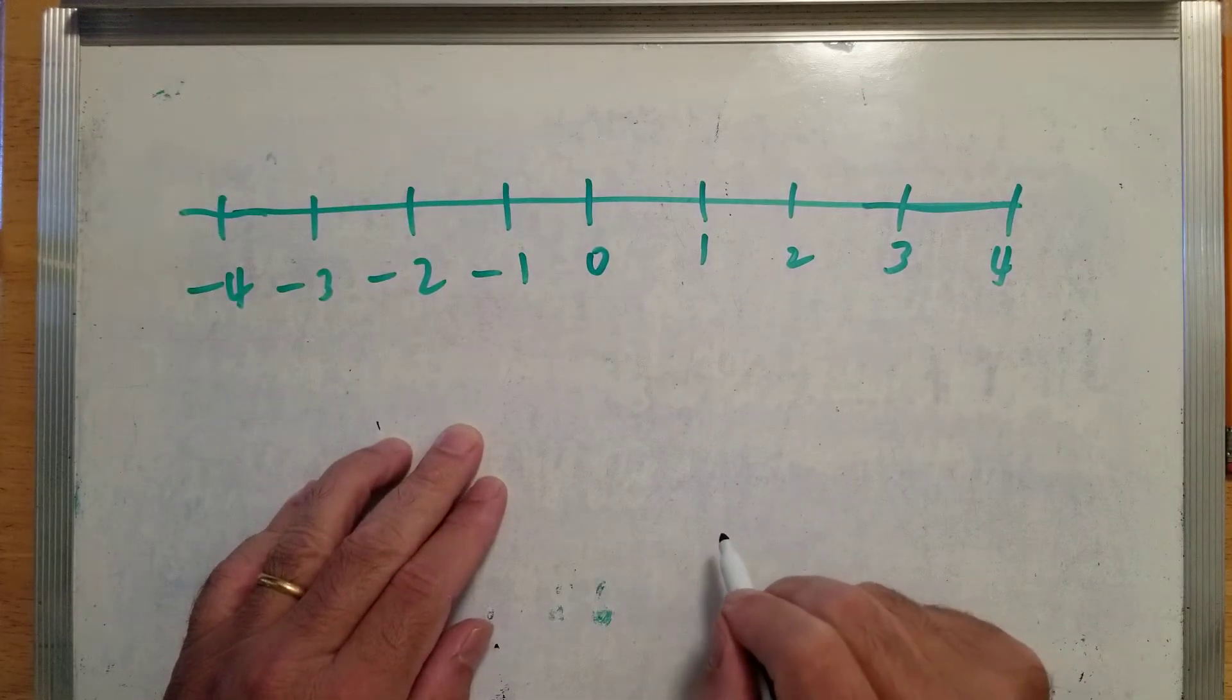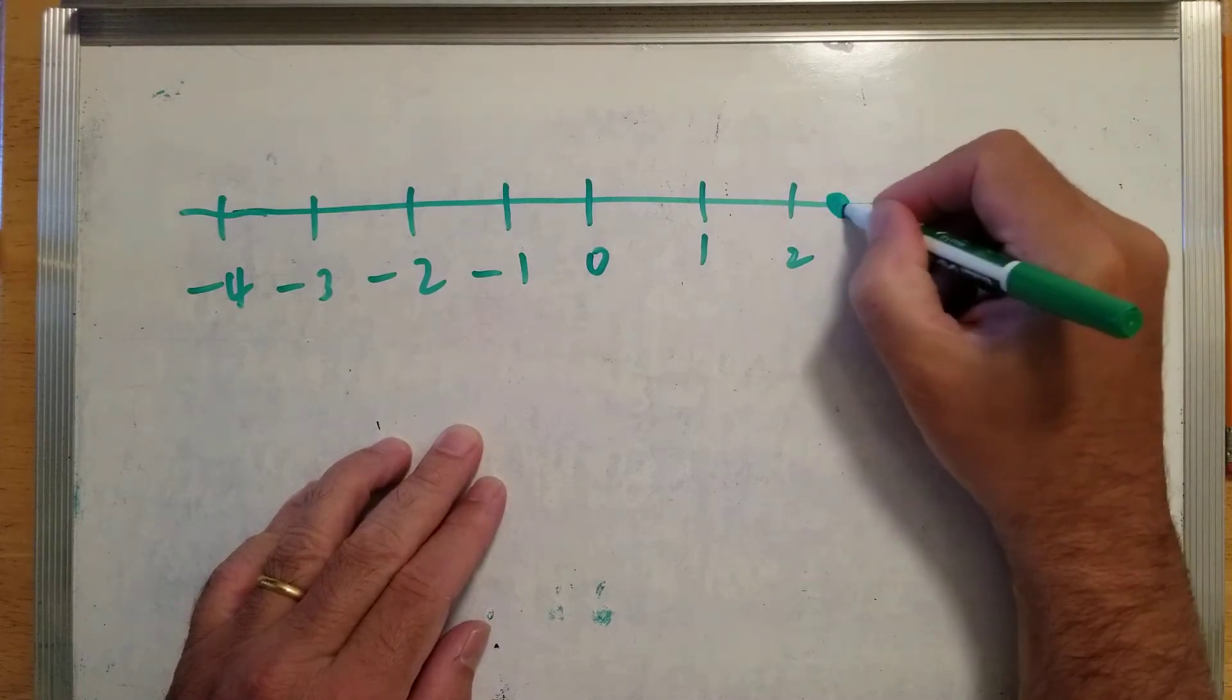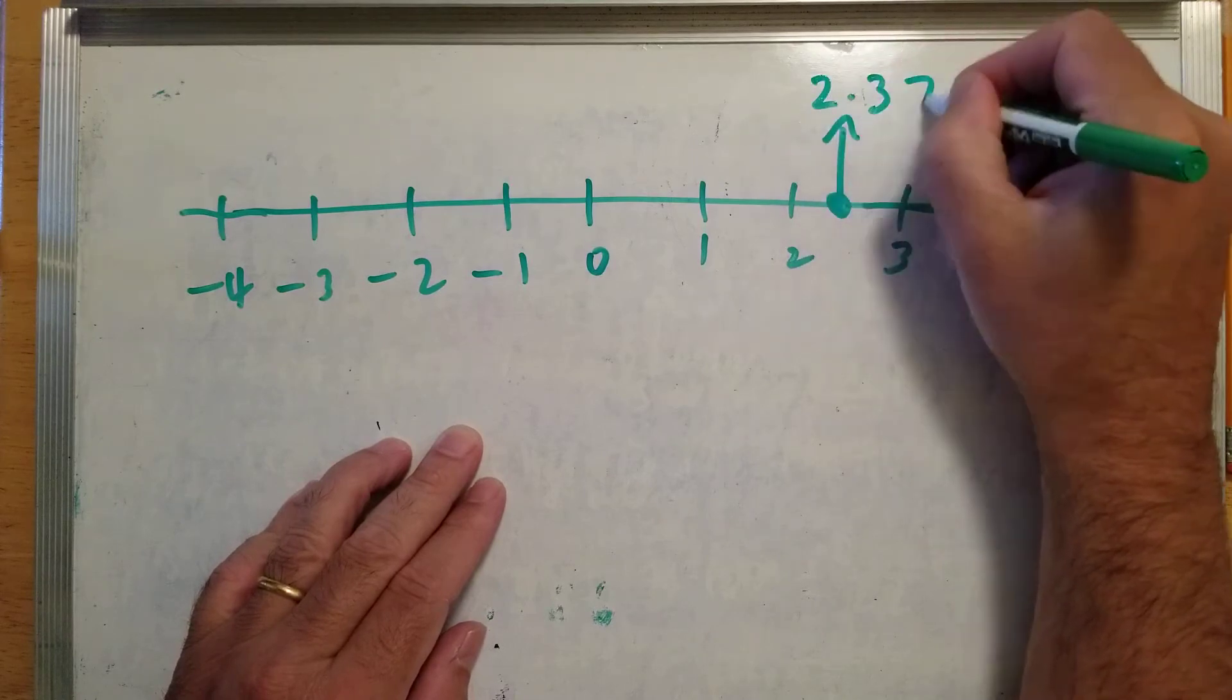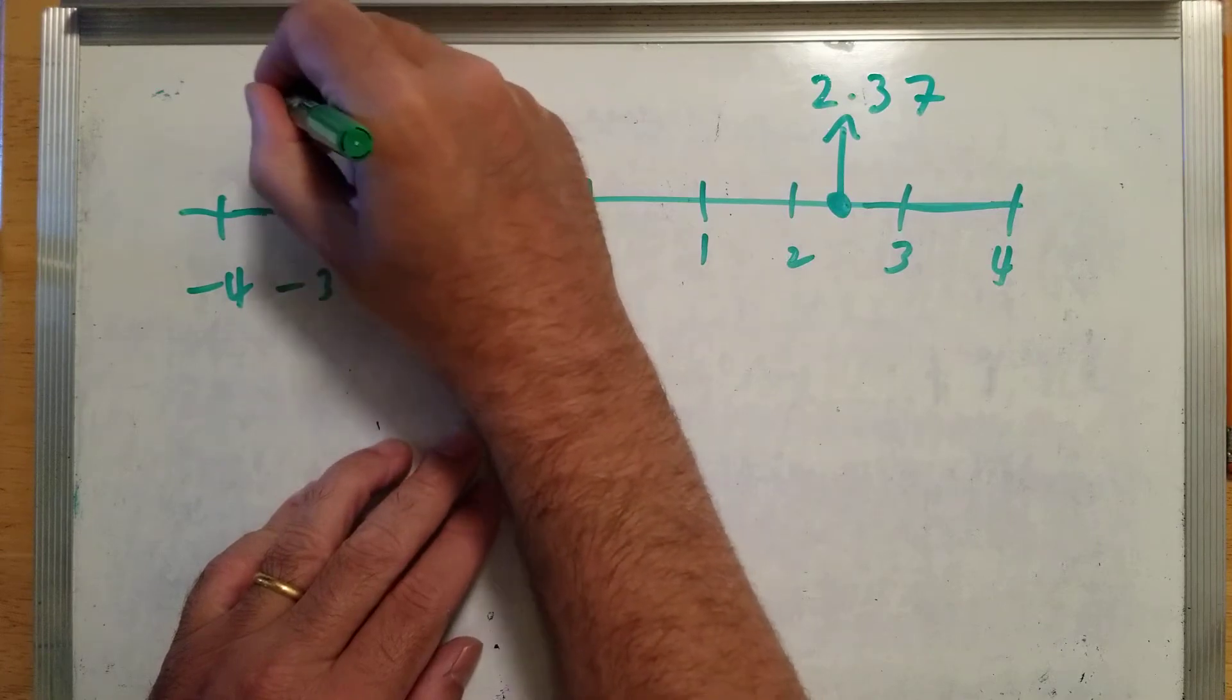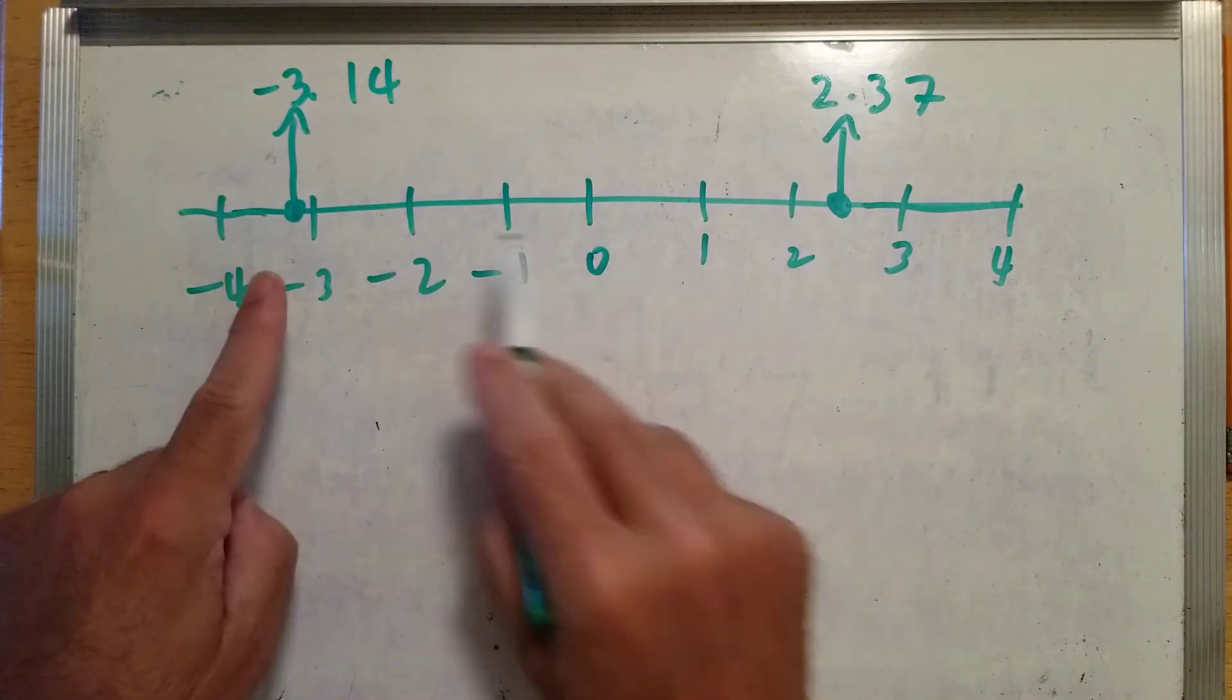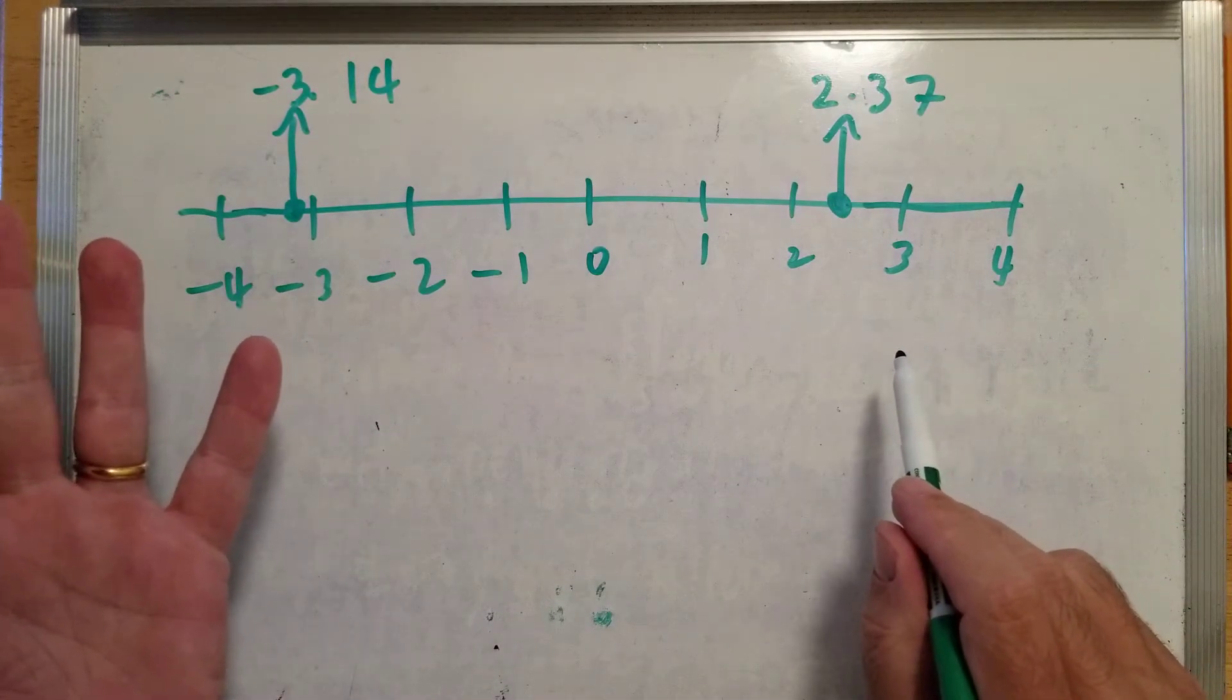And in the homework, they give you two values on the number line. Let's say for the sake of discussion right there, let's call that 2.37. And right over here, let's call that negative 3.14. They give you these two points on the number line and give you another number and ask you if it's in between or not.